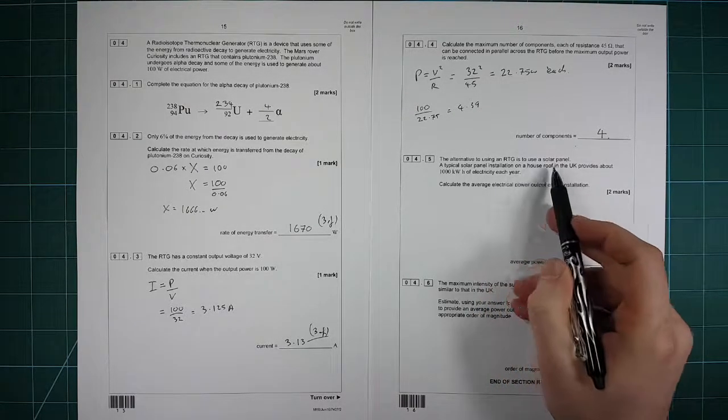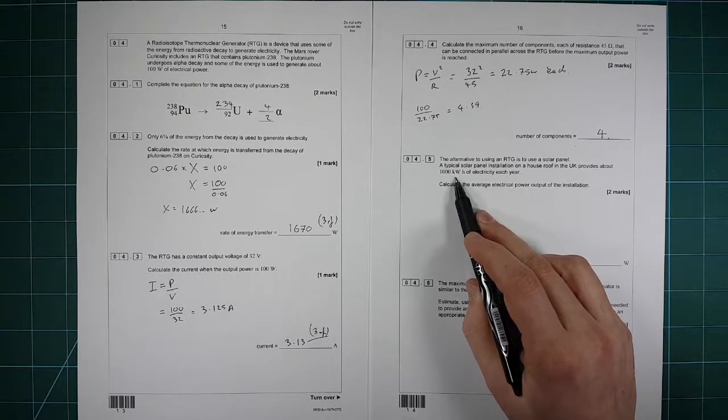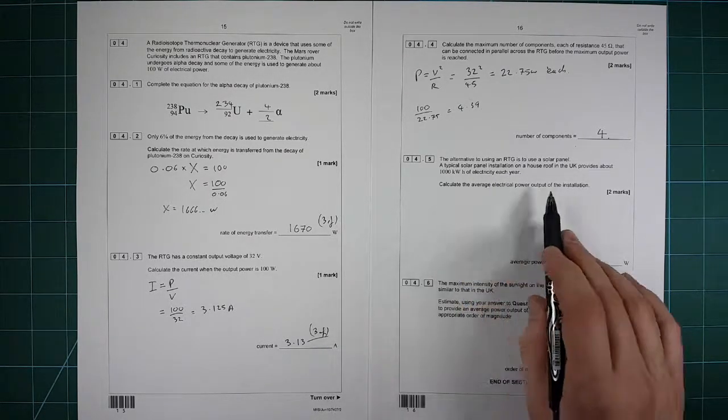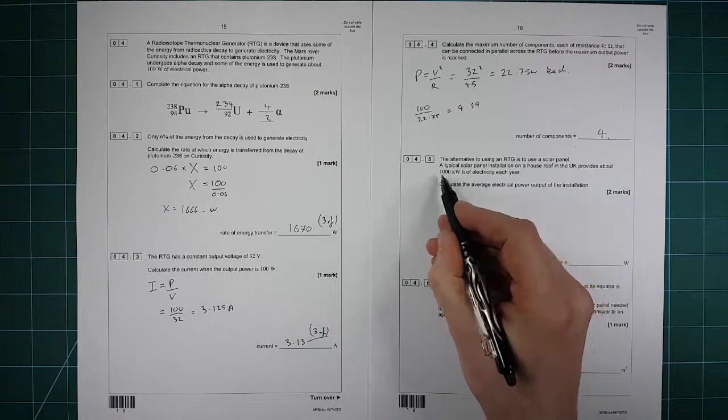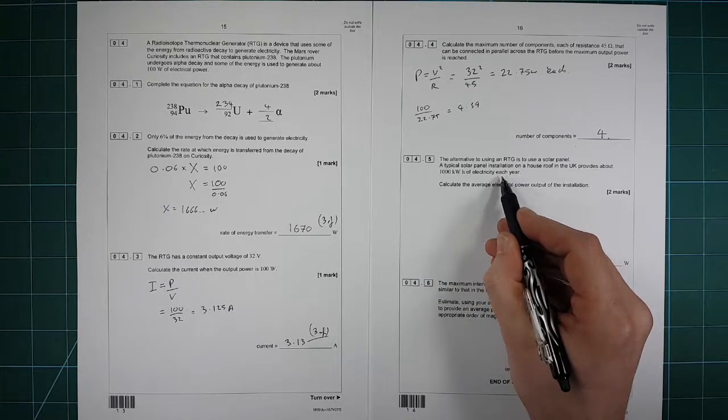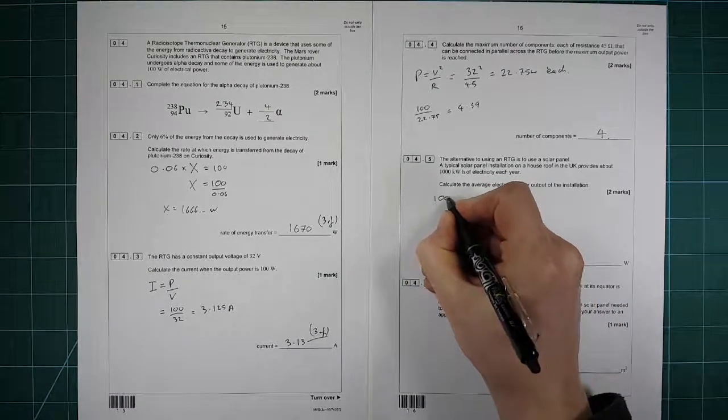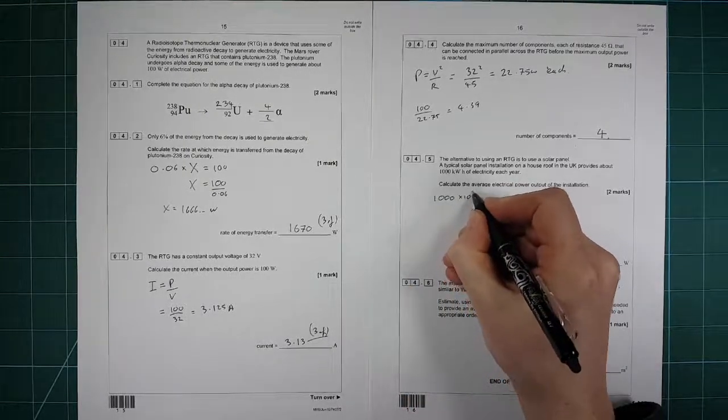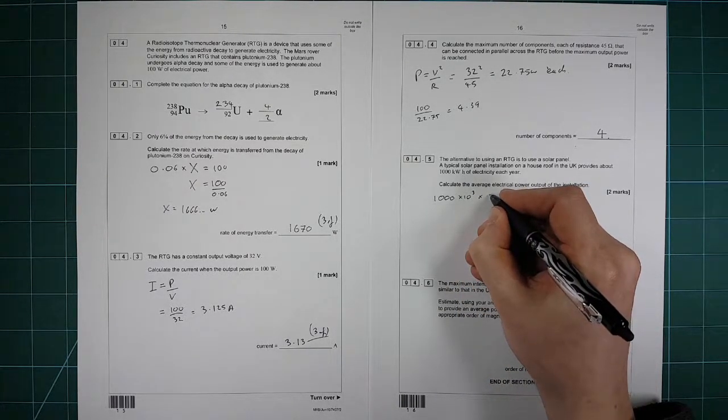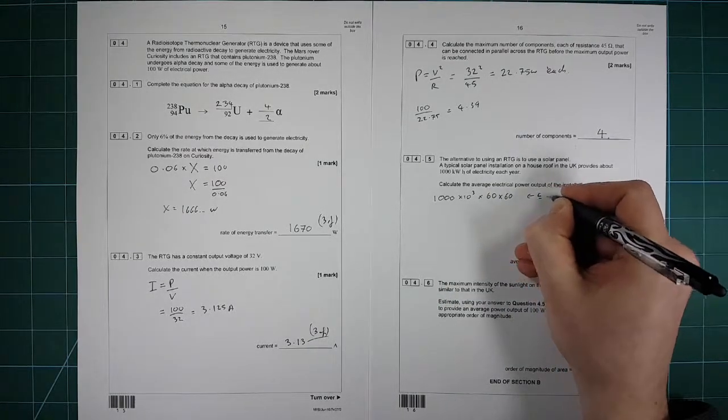The alternative is using a solar panel. A typical solar panel installation on a house provides about 1000 kilowatt hours of electricity each year. Right, so this is just a converting units. So first of all, we need to convert 1000 kilowatt hours into joules, and then we need to divide it by the amount of time in a year in seconds to find out what its power in watts is. So we've got 1000 kilowatts, so that's times 10 to the 3, hours, so we need to times by 60 times by 60. So that is the energy in joules.